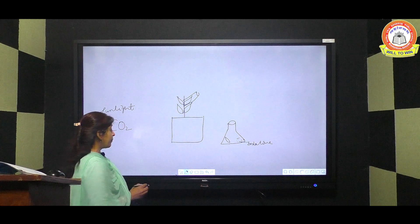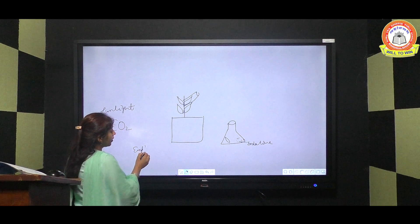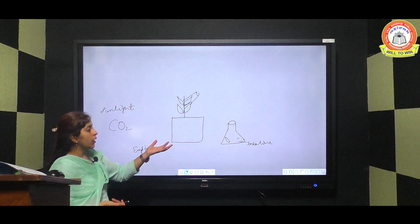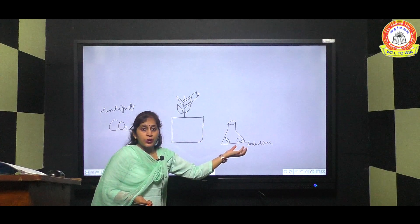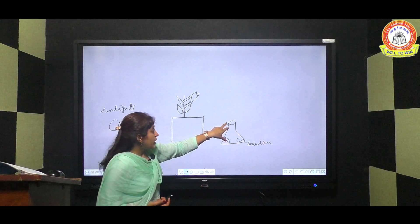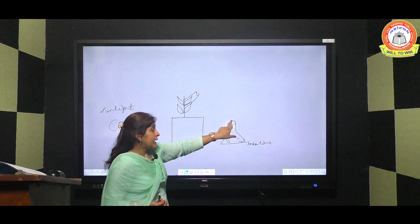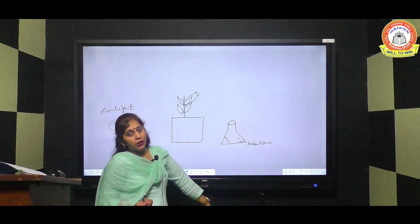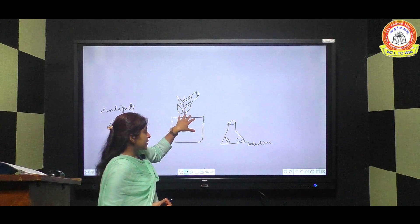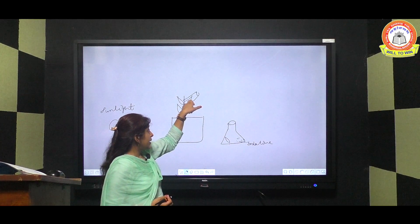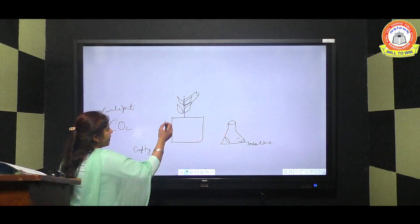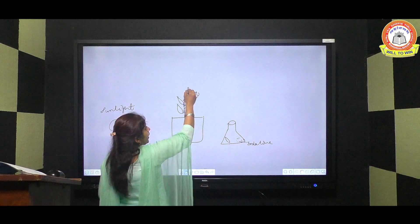We know every empty container has air, and air contains carbon dioxide gas. So soda lime tablets are used inside the flask to absorb whatever carbon dioxide gas is present. We will also close the flask tightly so that no external carbon dioxide can enter.